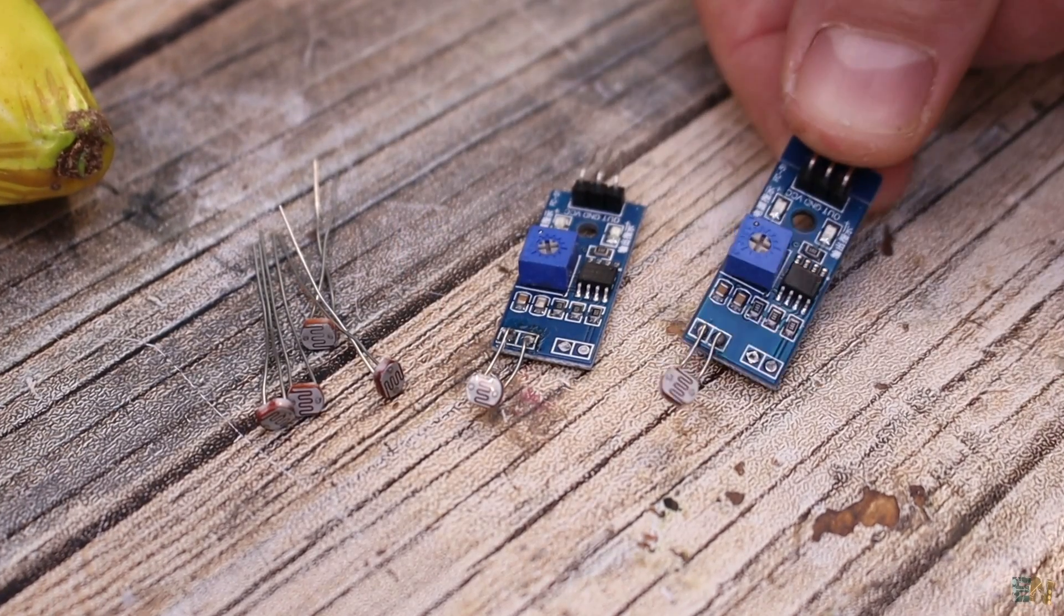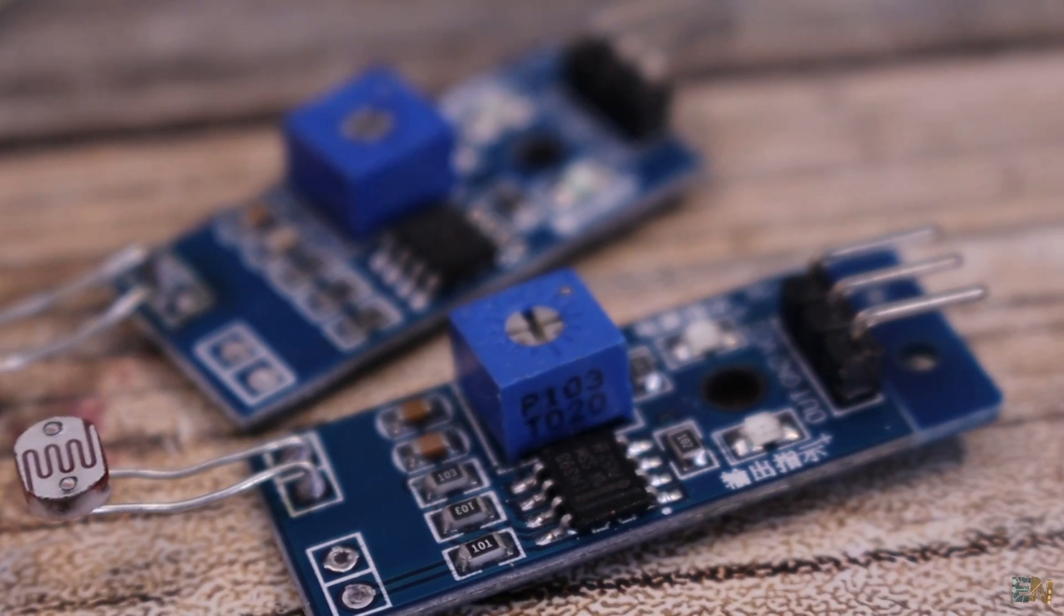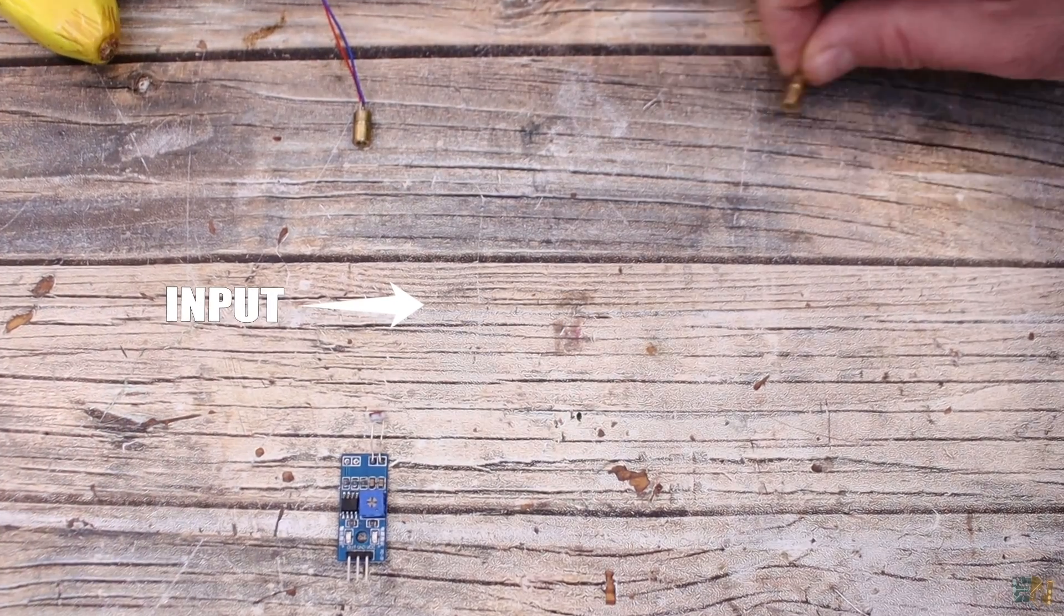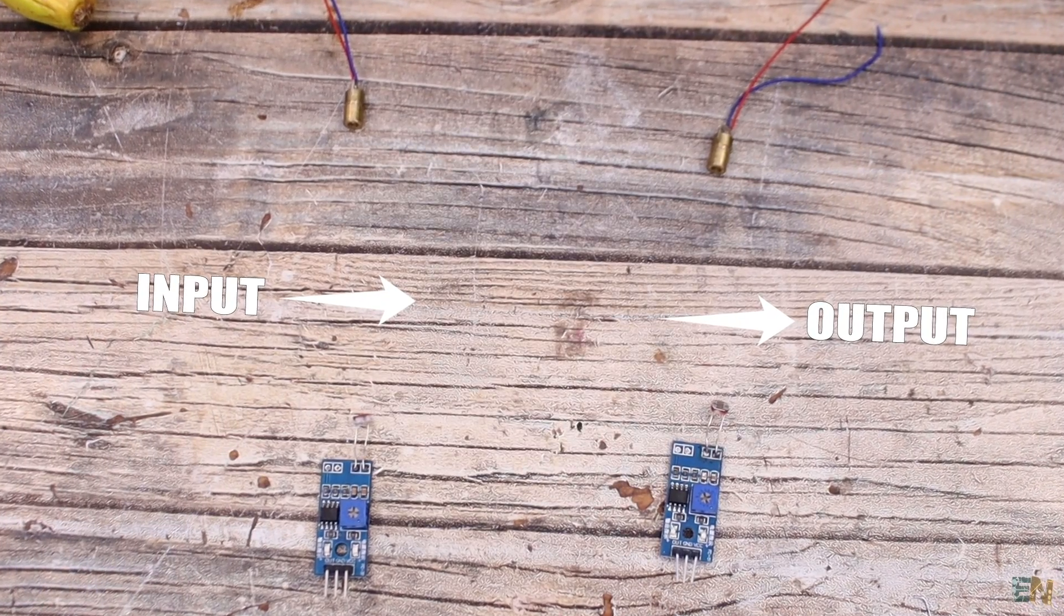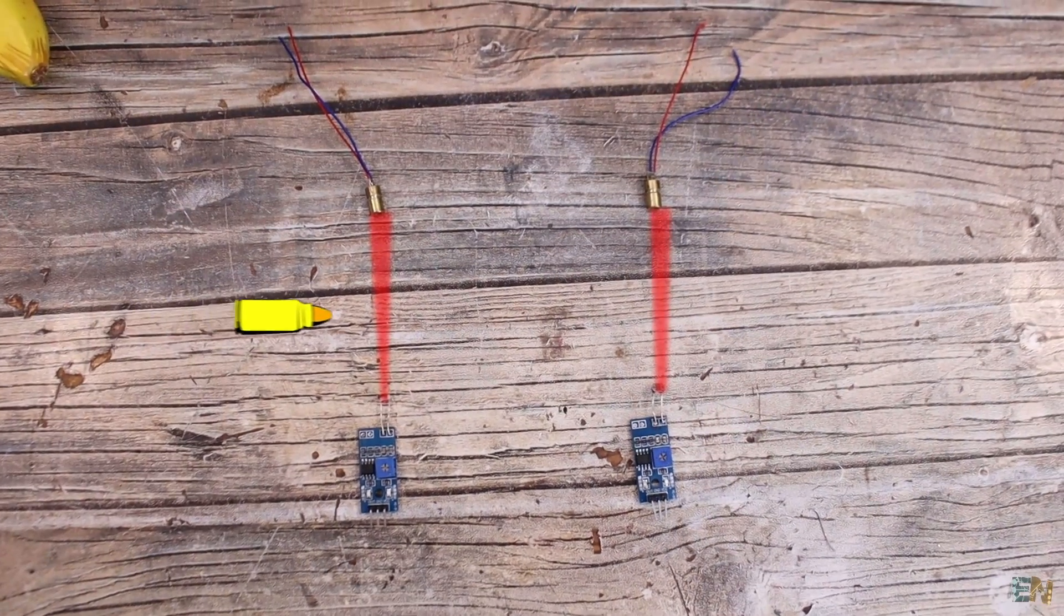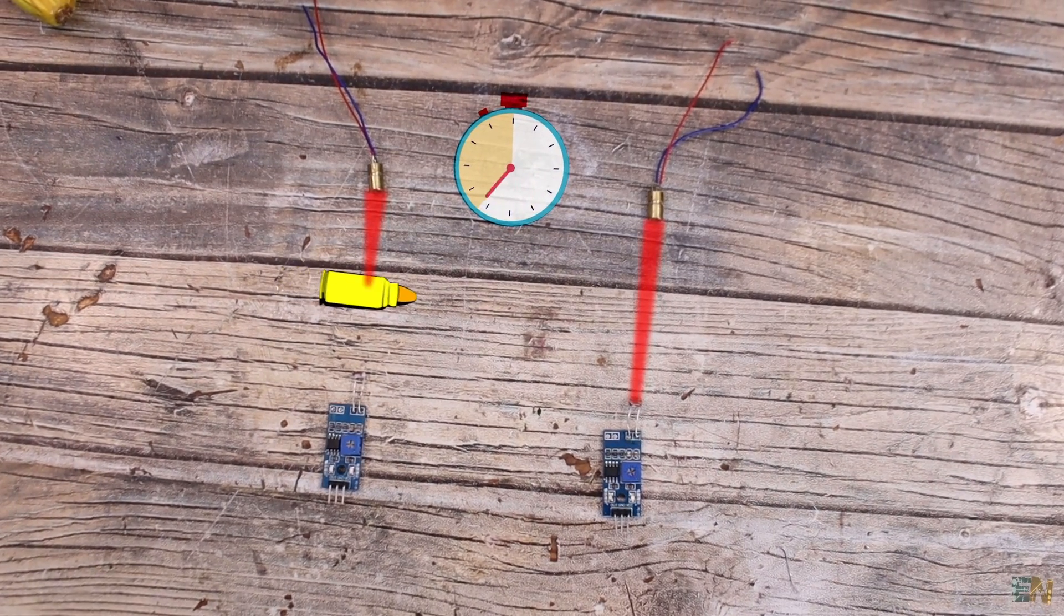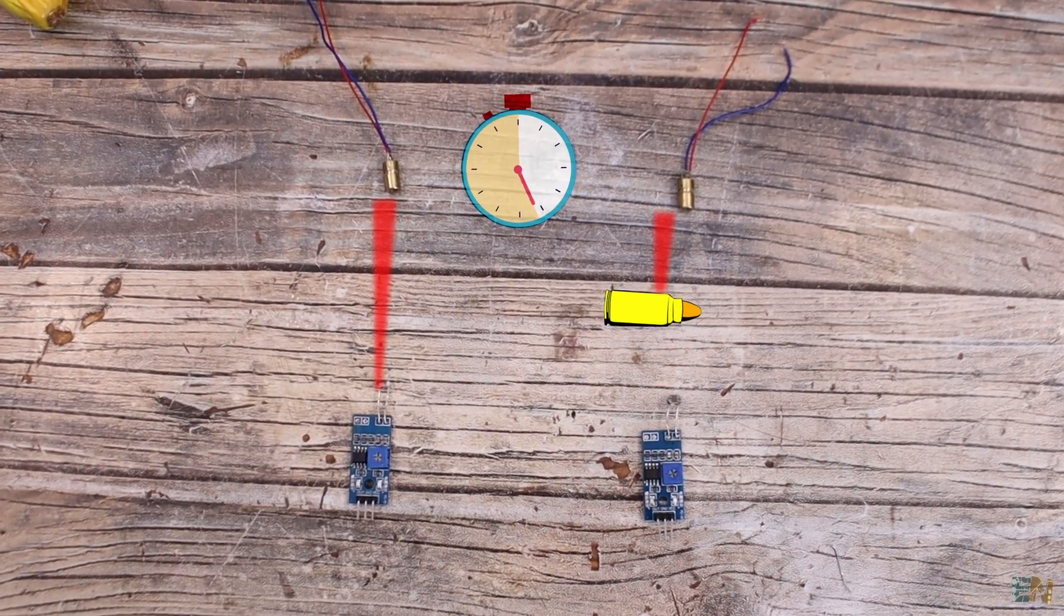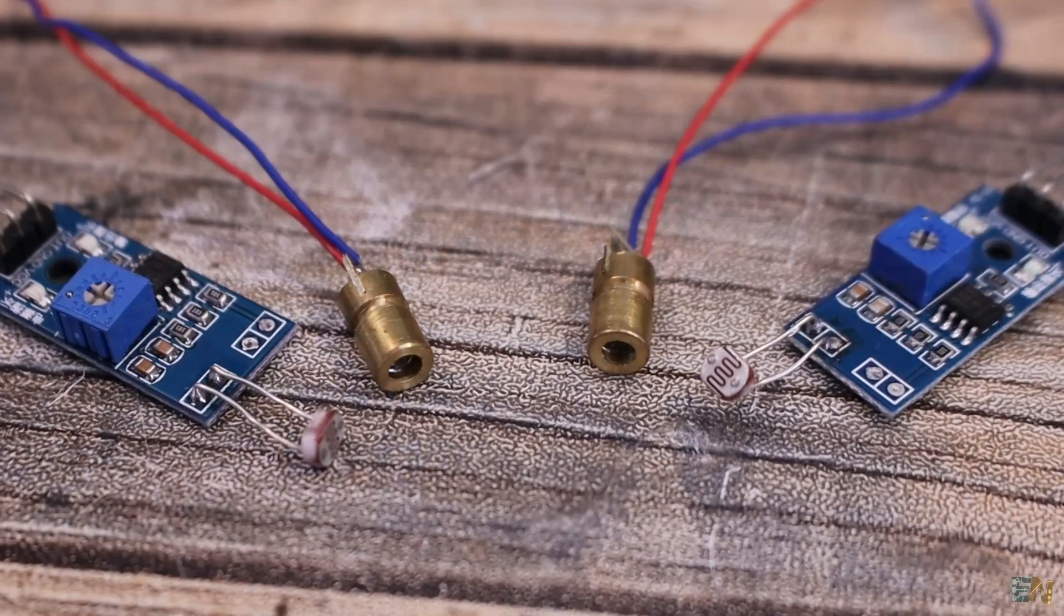But instead of the voltage divider, we can use these modules that already have a digital output, high or low. So my first idea went like this. We would have a pair of laser and an LDR sensor at the input and another pair at the output. When the bullet passes, it will cut the pass of the light so we can start a counter. When the bullet reaches the output, we stop that counter and calculate the speed. That sounds pretty easy, right?